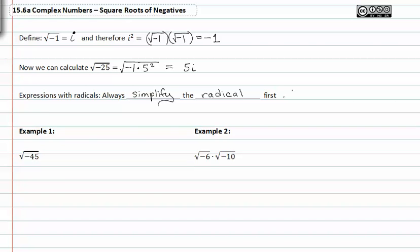Let's work on some radicals that have negatives inside of them. The first one is the square root of negative forty-five. Let's go ahead and prime factor forty-five really quickly before we go any further.